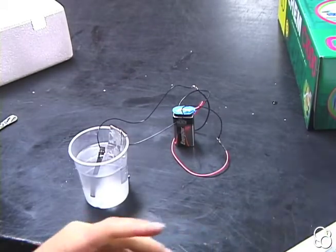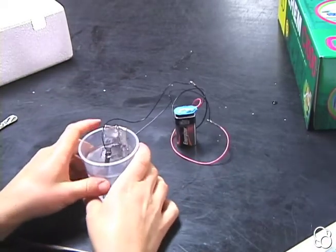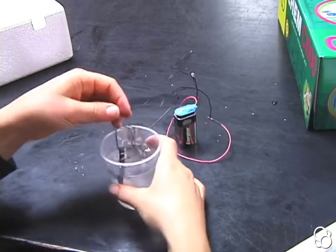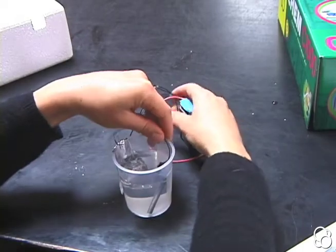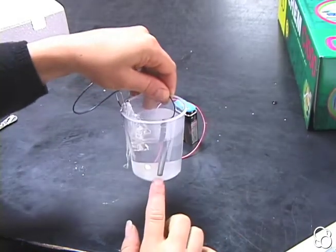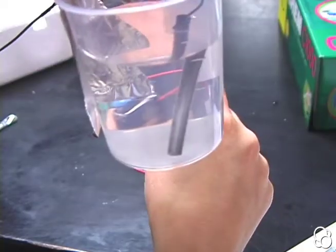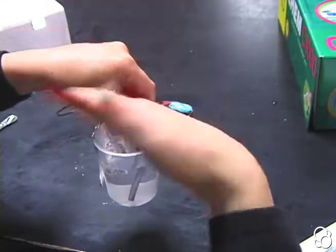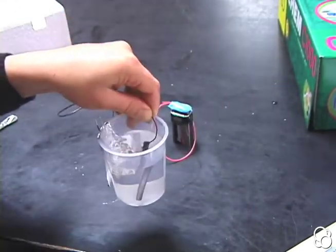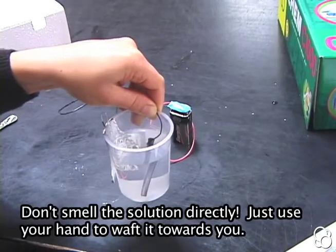As soon as the electrical circuit is closed, you should see gas bubbles arising from both places, from the graphite rod and also from the aluminum foil. That familiar smell from swimming pools.